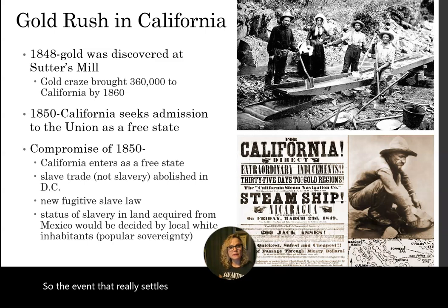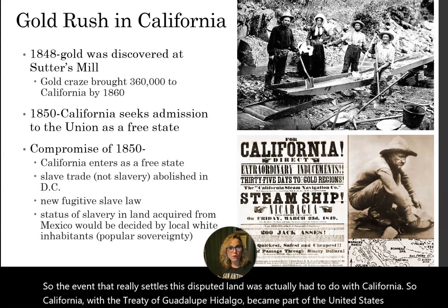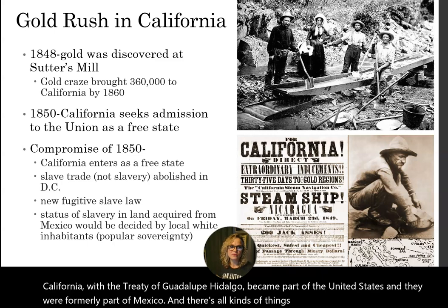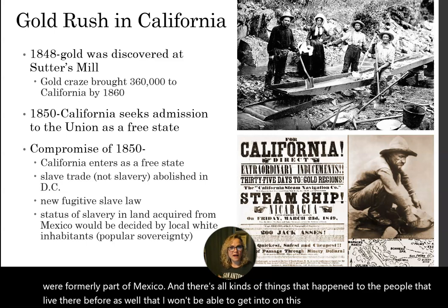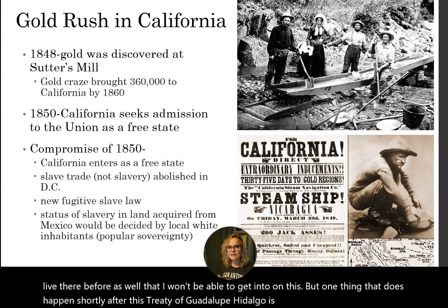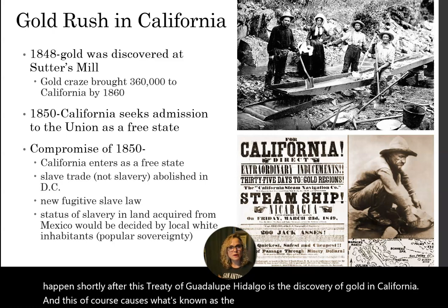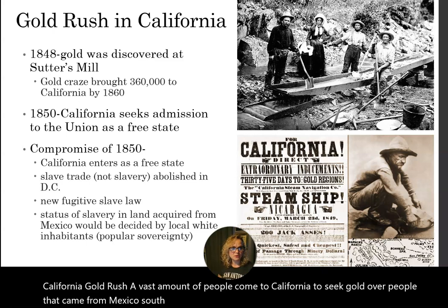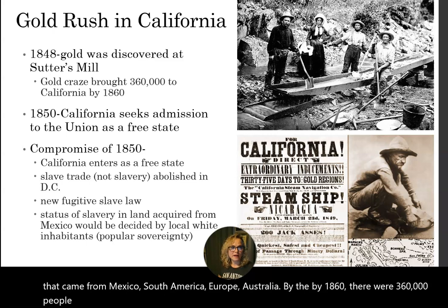The event that really settles this disputed land had to do with California. California, with the Treaty of Guadalupe Hidalgo, became part of the United States — formerly part of Mexico. Shortly after the treaty, there was the discovery of gold in California, which caused the California Gold Rush. A vast number of people came from Mexico, South America, Europe, and Australia to seek gold, and by 1860 there were 360,000 people in California.